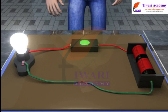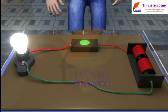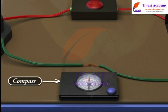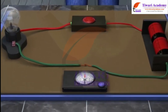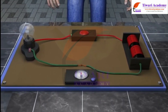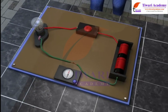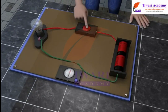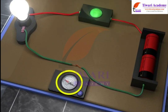A circuit is simply a closed loop through which charges can continuously move. Let us place a compass beneath the wire at any location such that its needle is placed in alignment with the wire. Once the final connection is made to the battery pack, the light bulb lights and the compass needle deflects. The needle serves as a detector of moving charges within the wire.